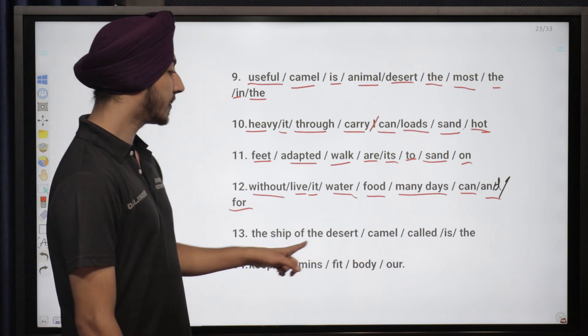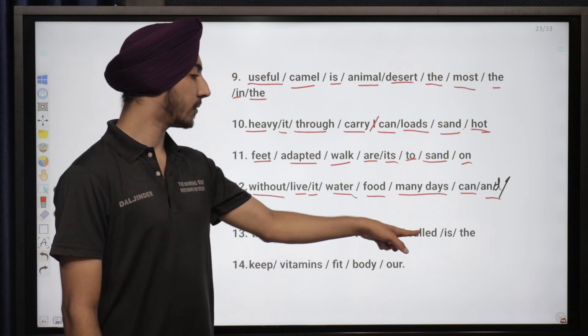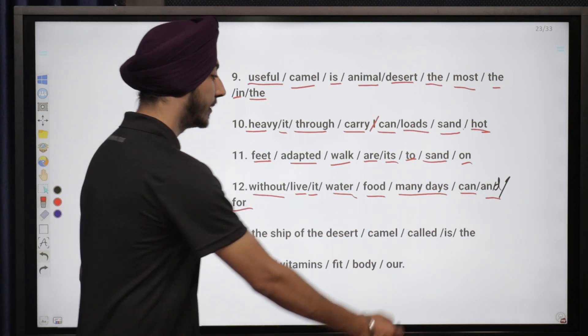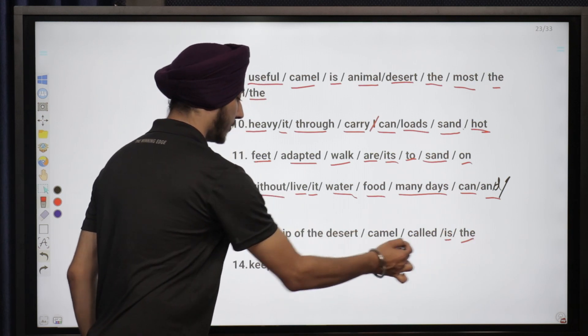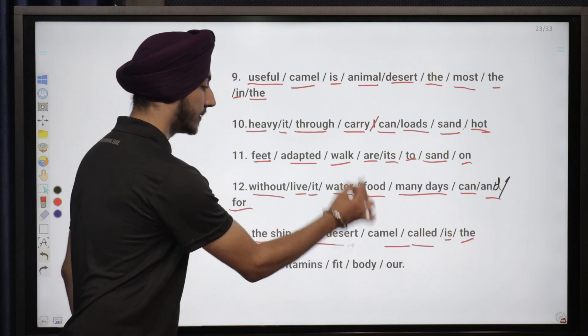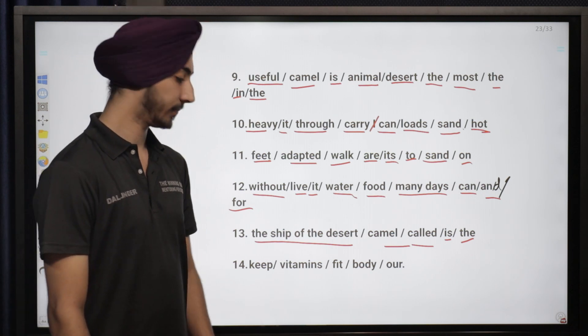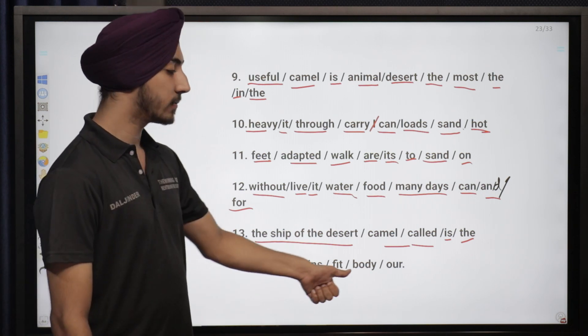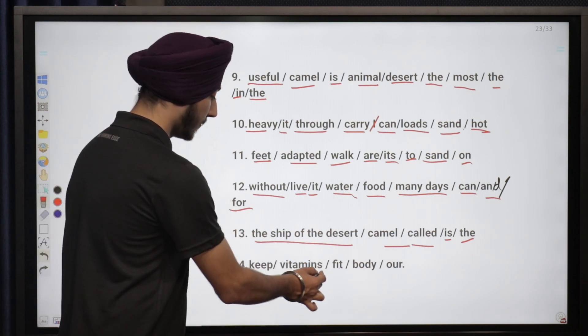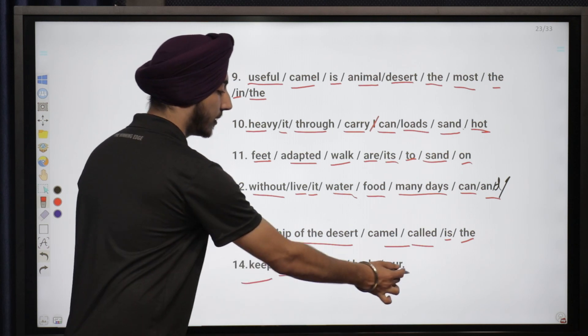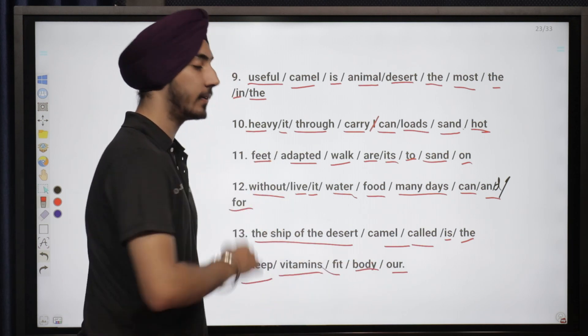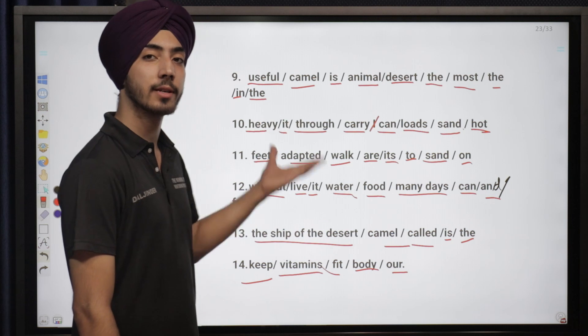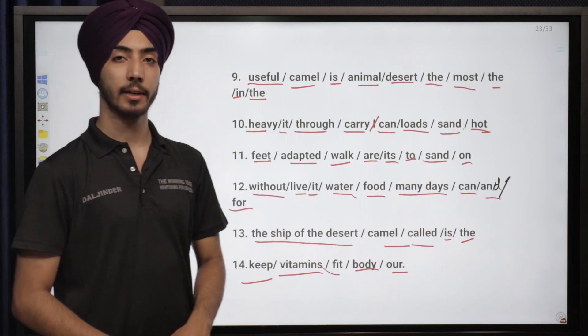Let's look at the next sentence: the ship of the desert camel called is the. This is very simple. The camel is called the ship of the desert. Keep vitamins fit body our. Vitamins keep our body fit. Simple questions, you just have to make them in proper sequence.